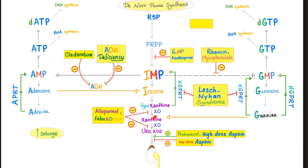If we would like to inhibit xanthine oxidase to inhibit the formation of uric acid and manage gout, you can use allopurinol or febuxostat. They will inhibit xanthine oxidase — XO stands for xanthine oxidase — and the suffix 'stat' means to stop because they inhibit xanthine oxidase. These two drugs will prevent the formation of uric acid.